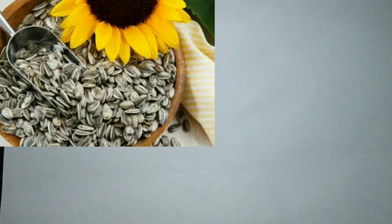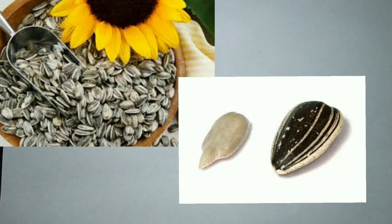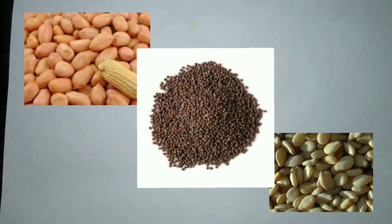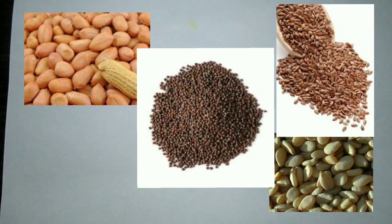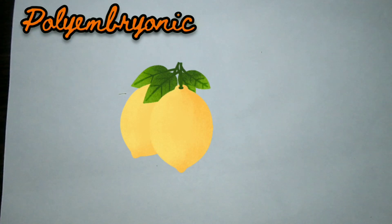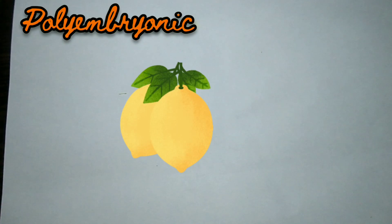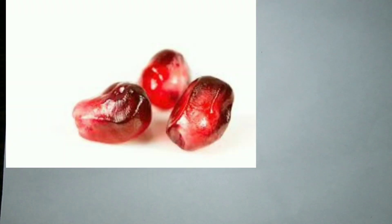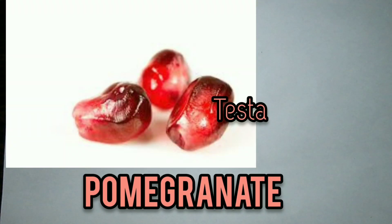The sunflower seed is actually its fruit enclosing a single seed; the hard covering is the fruit wall or pericarp. Inside, the oily embryo is found covered by a brownish membranous seed coat. Mustard, groundnut, sesame, and flax seed contain a lot of oils in their cotyledons. In orange and lemon, the seed is sometimes polyembryonic — that is, it contains more than one embryo. The oak acorn is a fruit, and the testa of the pomegranate is juicy and forms the edible part.